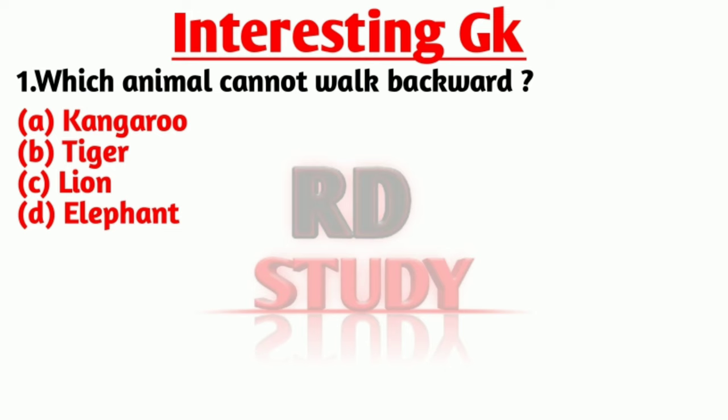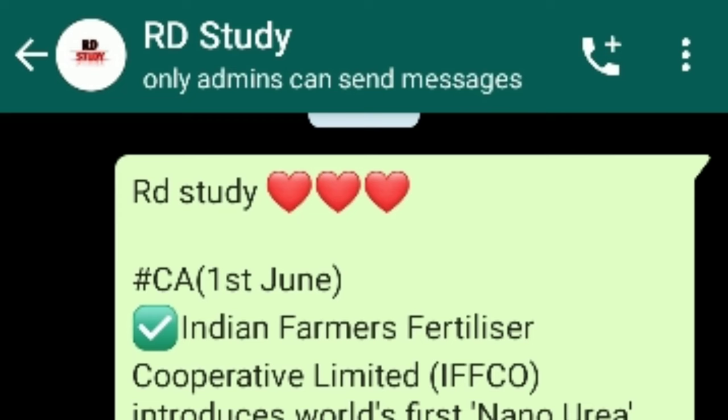Our first question is: which animal cannot walk backwards? The right answer is option A, Kangaroo. Kangaroo cannot walk backwards. Kangaroo is the national animal of Australia.